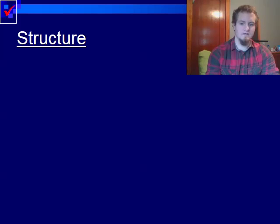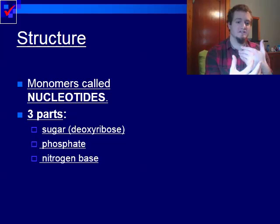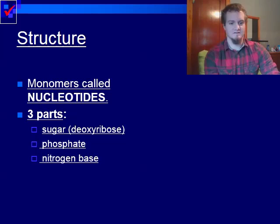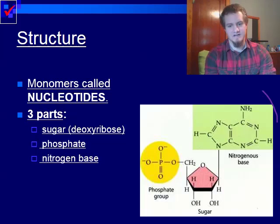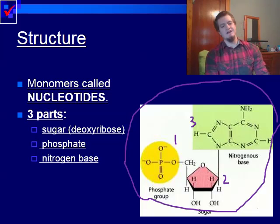The structure: DNA is made up of monomers called nucleotides. We actually talked about nucleotides during the biochem unit. A nucleotide is composed of three different parts: we have a sugar — in this case deoxyribose — a phosphate, and a nitrogen base. When you actually see a nucleotide, it's going to look something like this — we have our phosphate, our sugar, and our nitrogen base. DNA is just a chain of these linking together.